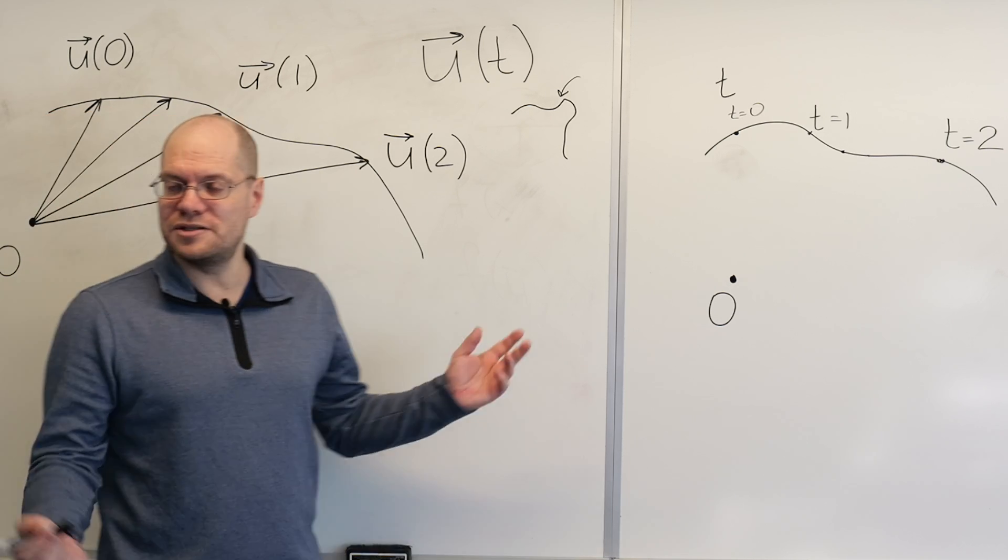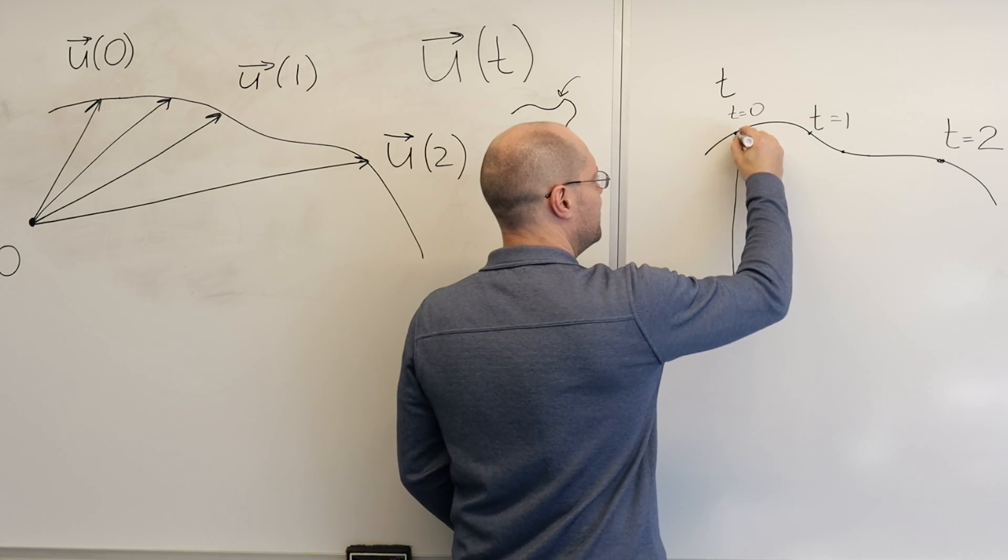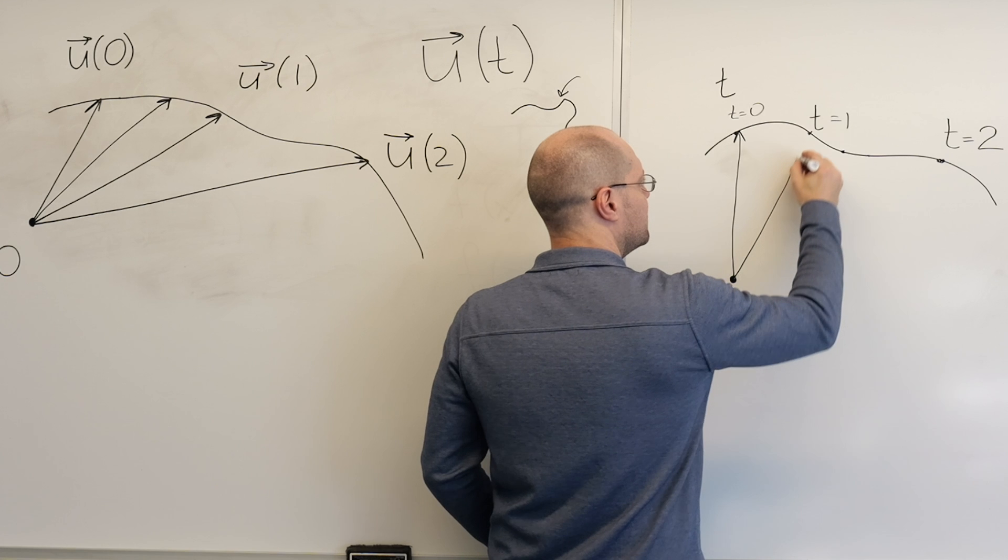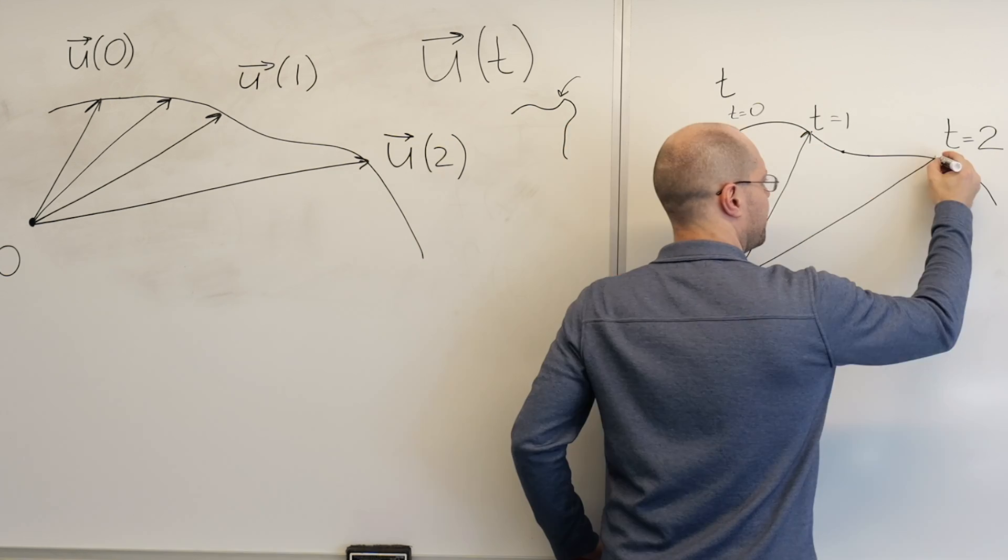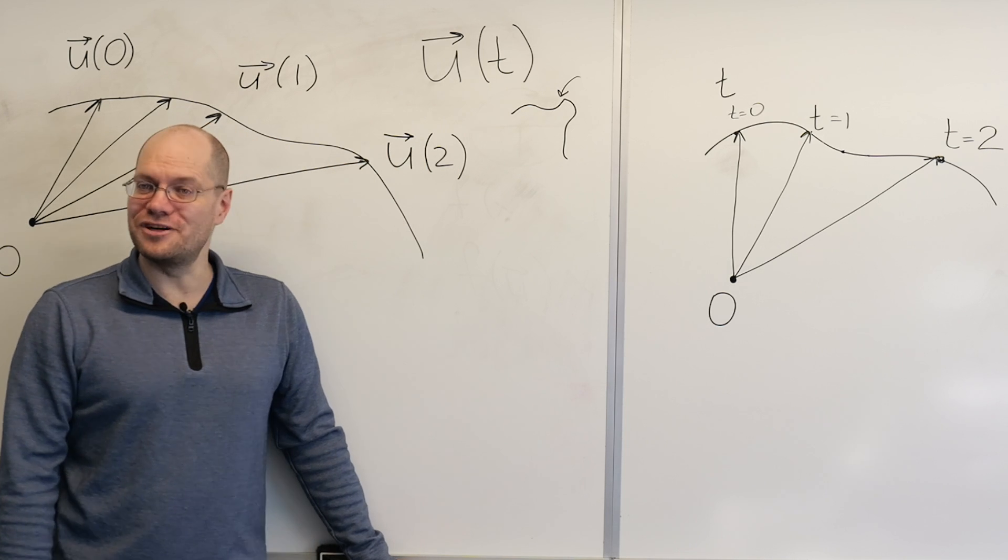And as soon as you have a parametrization, you have a vector-valued function. I missed it. This is U of 0. This is U of 1. Oh, I missed it again a little bit. I must be rushing.